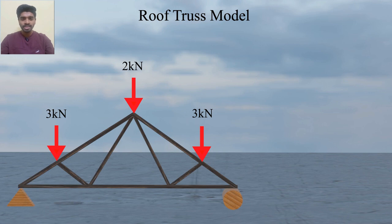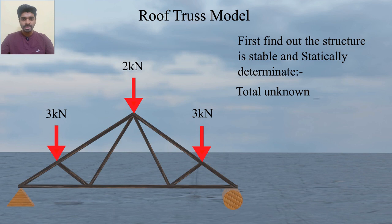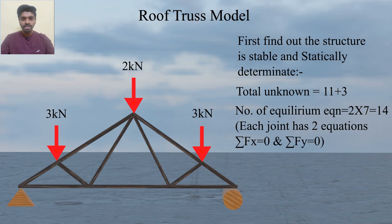Before starting the analysis, we have to verify that this structure is stable and statically determinate. To check this, the condition is that the total number of unknown forces should be equal to the number of equilibrium equations available. Here we have 11 members and 3 reactions, so total unknown forces are 11 plus 3, which equals 14. The number of equilibrium equations is the total number of joints multiplied by two, since at each joint we have two equilibrium equations — summation of forces in the x-axis and summation of forces in the y-axis — giving 14 equilibrium equations in total.